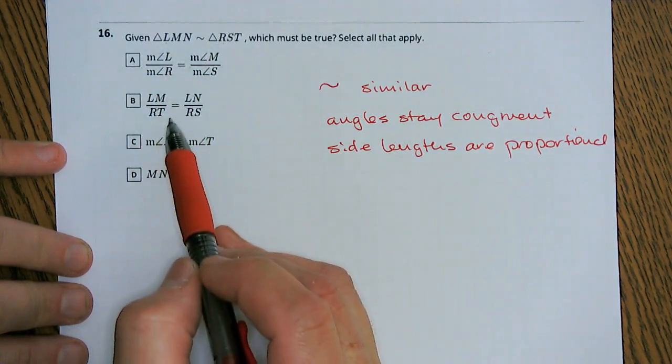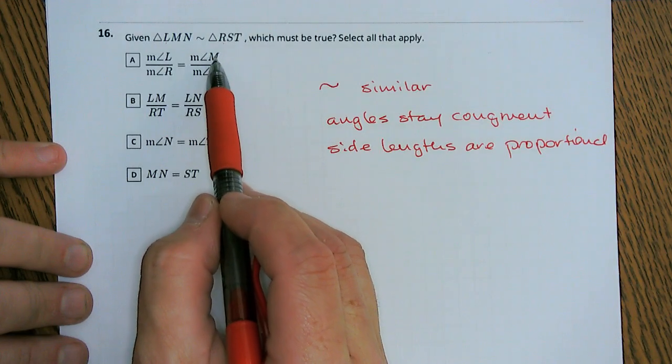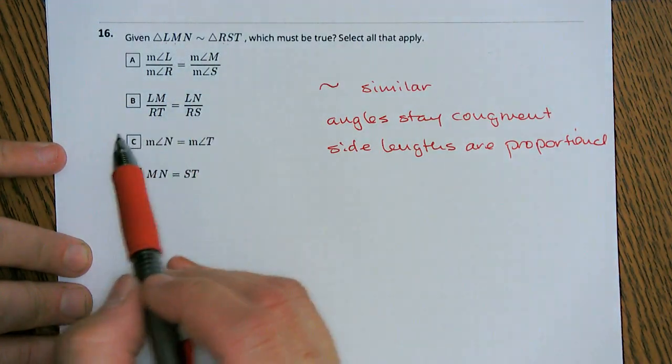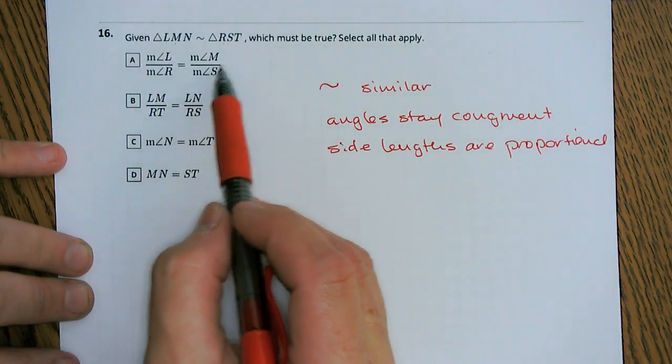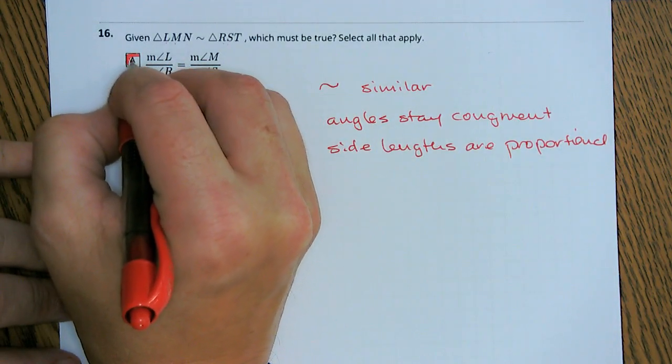Well if we're comparing the measure of angle L to R, well that's first letter, first letter, is equal to the angle M over S, M over S, second letter, second letter. So our angles, and those are going to be proportional, so A works.